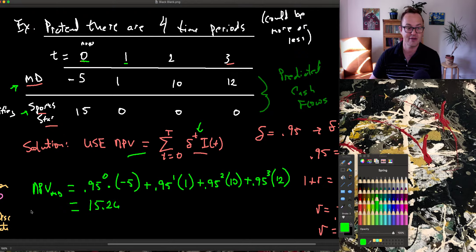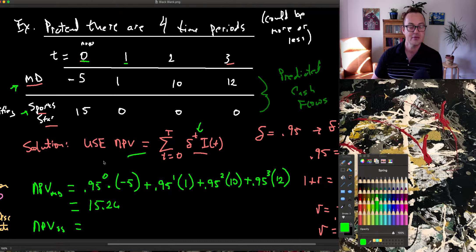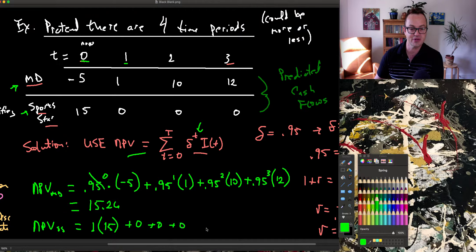Now let's compare that to being the NPV of being a sports star, which is much easier because in time period now, 0.95 raised to zero. Again, we can simplify that to one. This is basically one times 15. The next three periods is zero plus zero plus zero. So the NPV of being a sports star is 15.